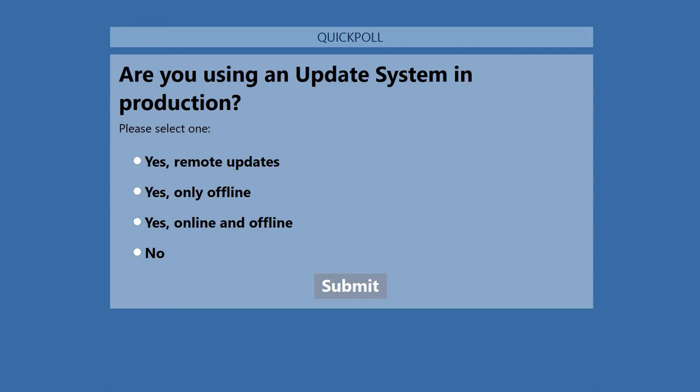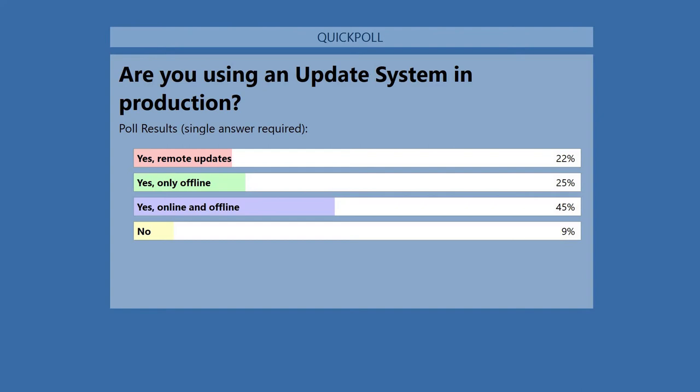Now I'm interested in what you think about remote updates, offline updates, and what your plan is. Please respond to the poll: are you doing remote updates? Only offline updates? Do you need a mix of both? Or is it not something you're considering yet? Looking at the results, most respondents need both online and offline, with roughly equal numbers for remote-only and offline-only. It's interesting that most of you want to use both.